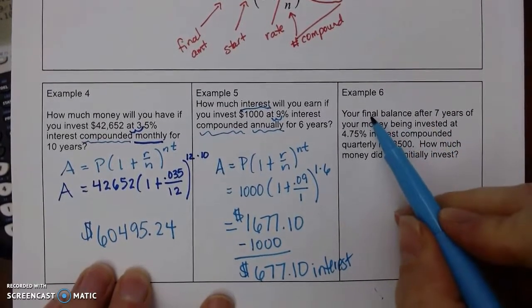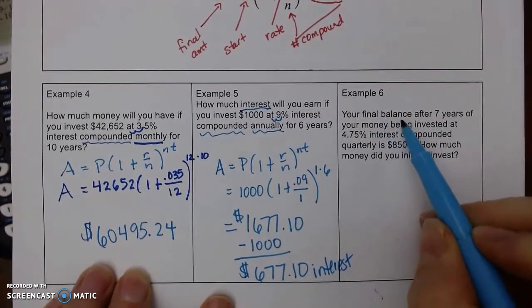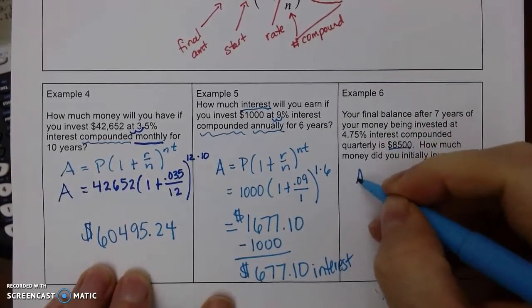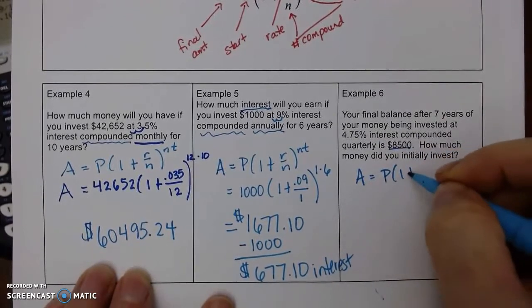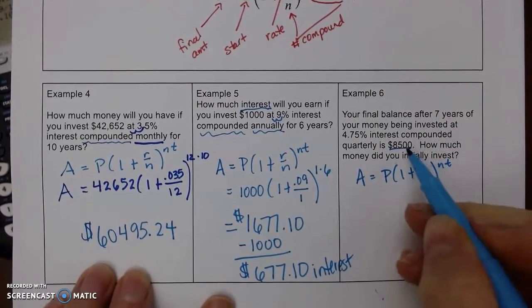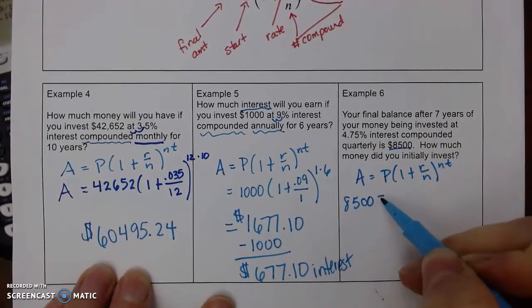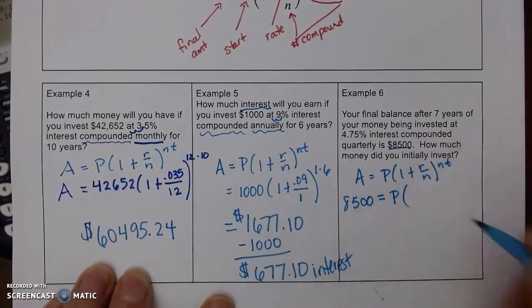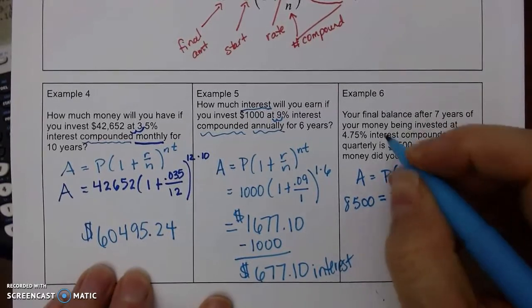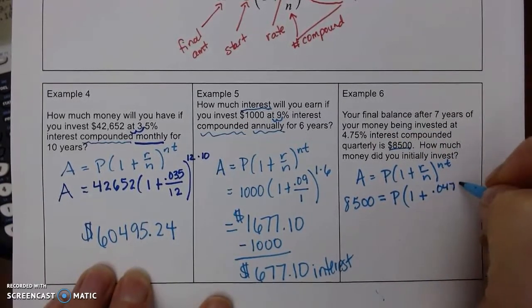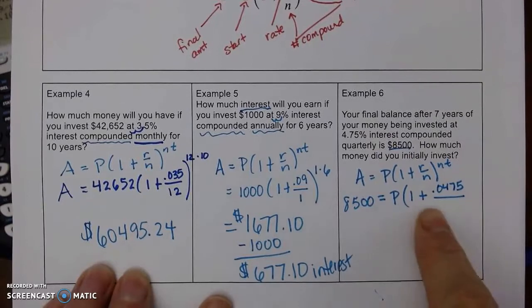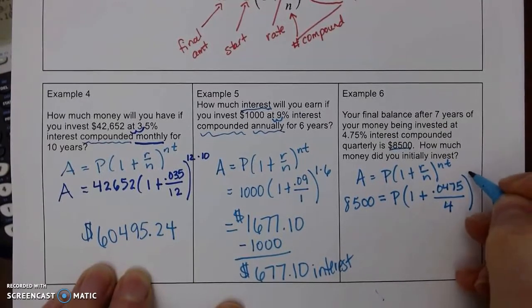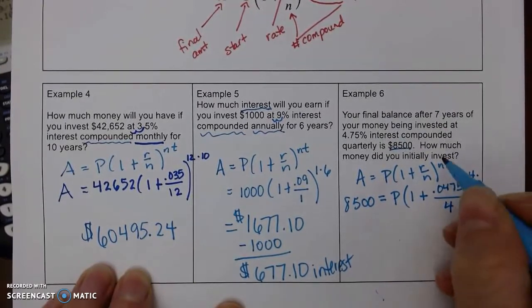And my last one. They tell us our final monthly balance after 7 years of being invested quarterly is $8,500. So, let's set up our general formula. That means that $8,500 is what I ended up with. That's our A. How much money did we invest? So, that is my P I need to find. 1 plus my rate, 0.0475. Do not round. It is compounded quarterly. So, quarters, there's four quarters in a year. And then 4 times, we did it for 7 years.